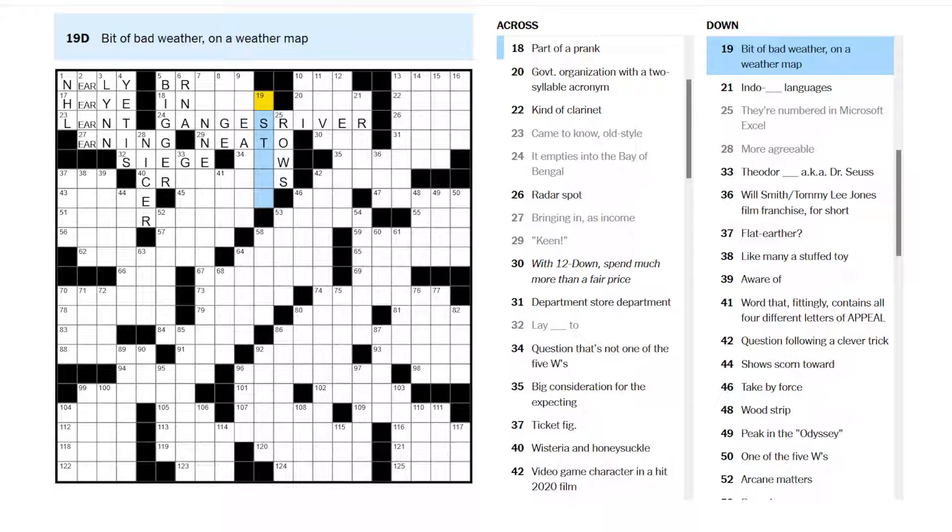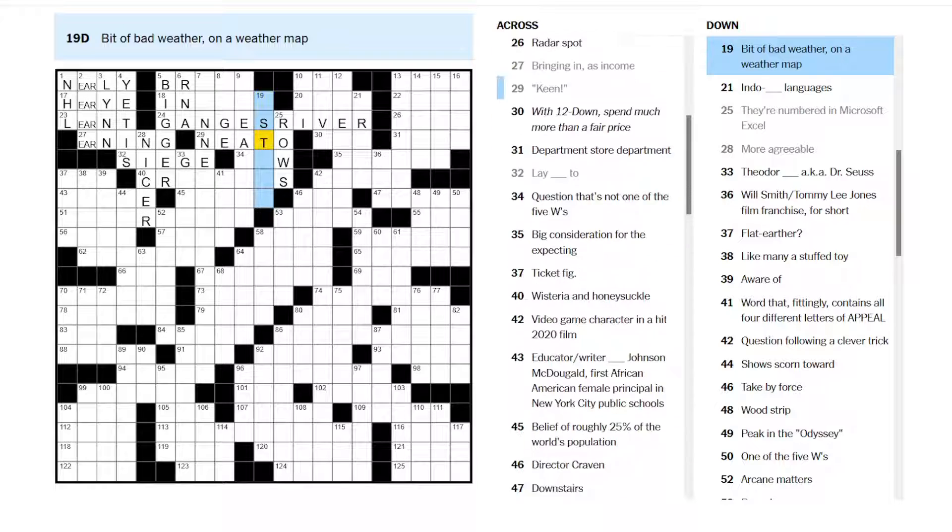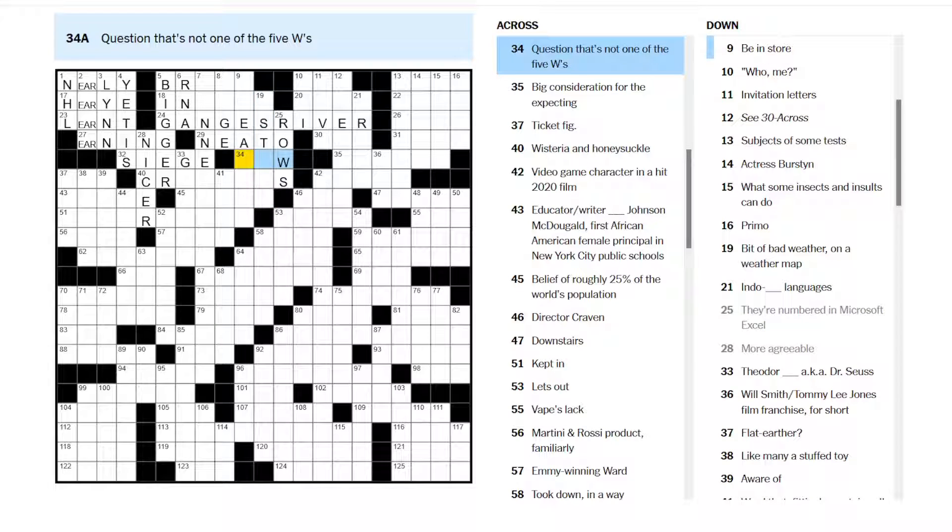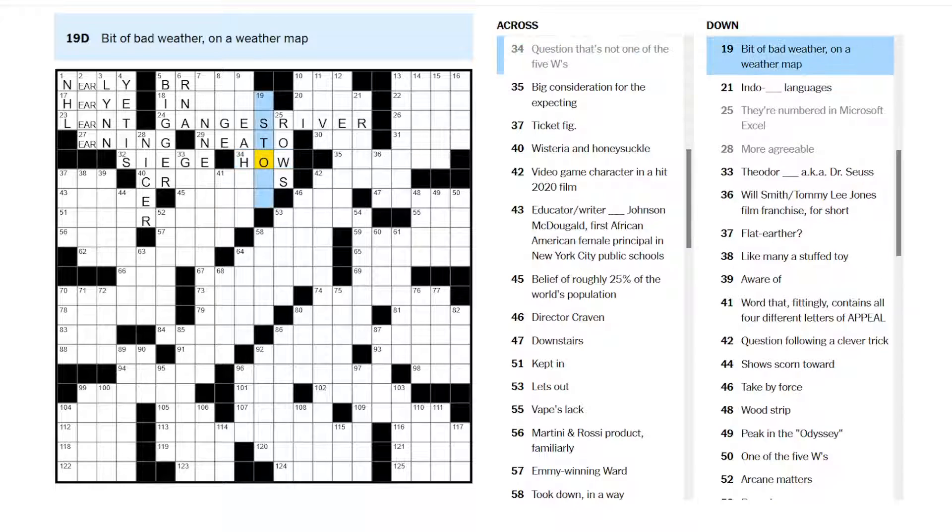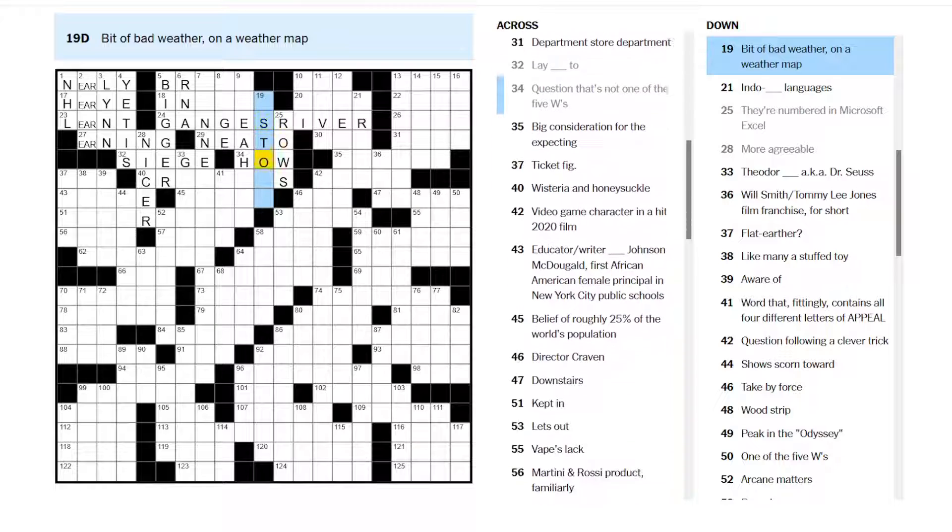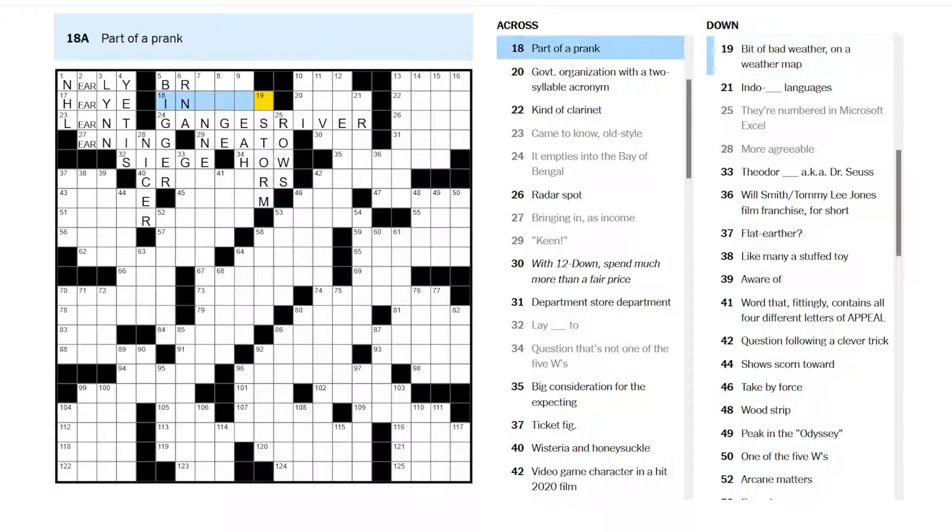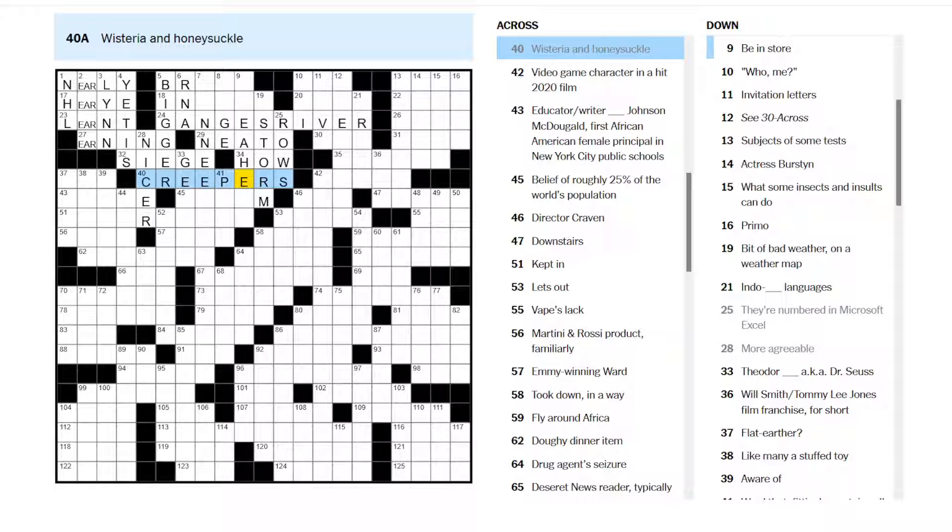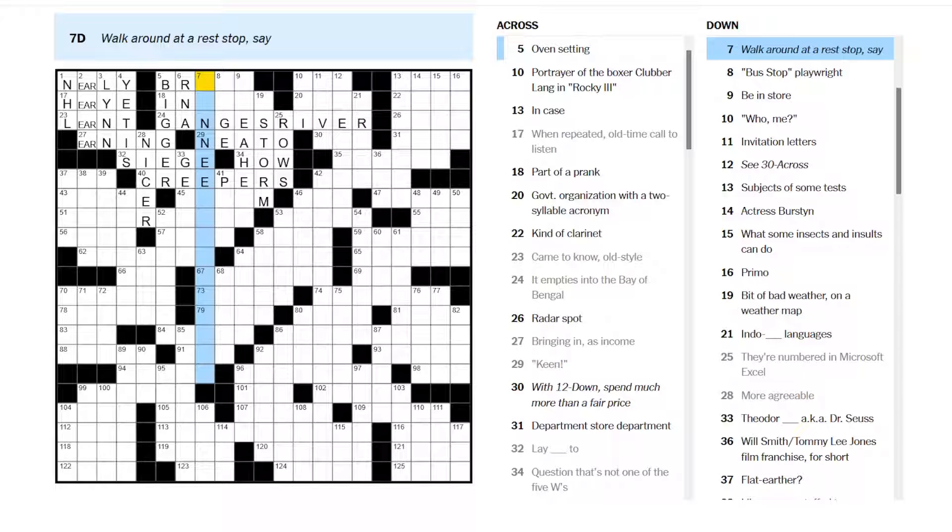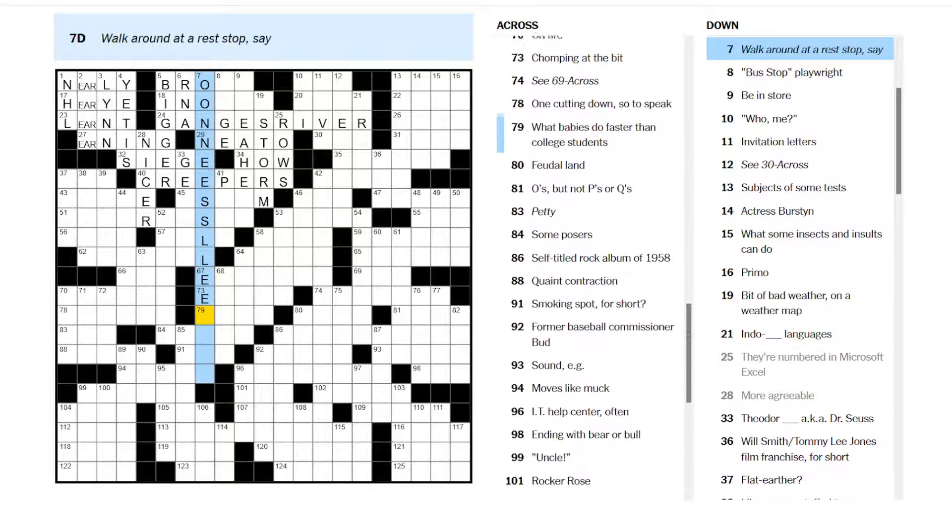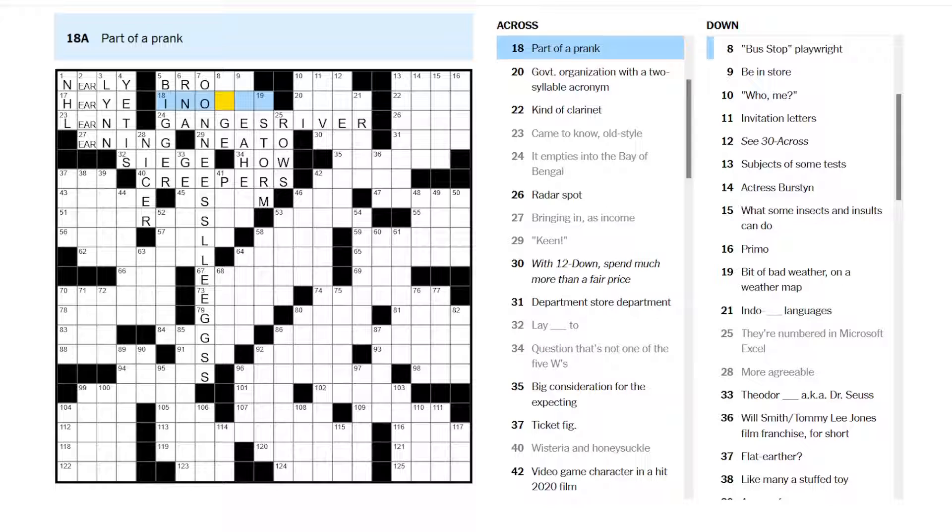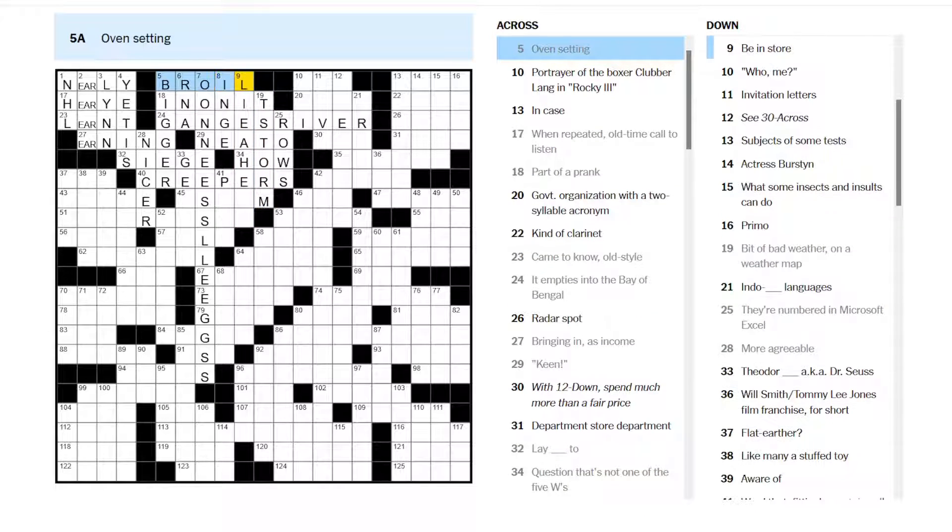Keen, maybe it's Neato or something. They're numbered in Microsoft Excel, rows are numbered. Maybe this is Neato. Bit of bad weather on a weather map. There's a front on a weather map. Questions that's not one of the five W's. Maybe how, who, what, when, where, why. Some kind of storm. Creepers. I recognize that creeping vines, right, are called creepers.